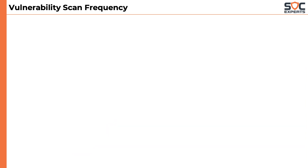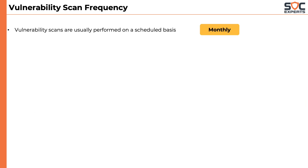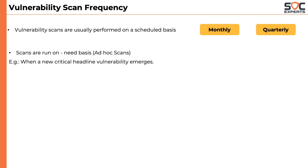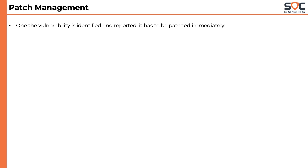Let's understand how frequently these scans are run. Vulnerability scans are usually performed on a scheduled basis — typically monthly or quarterly. Scans can also be run on a need basis, called ad hoc scans. A solid example is when a new headline vulnerability emerges; the scans are configured to specifically look for that new vulnerability only. Once a vulnerability is identified and reported, it has to be patched immediately. The vulnerability management team is responsible for scanning, reporting, and highlighting the risk.